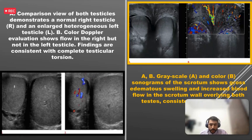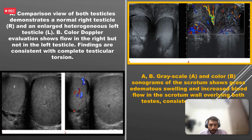In the Color Doppler and greyscale images, the right testis appears with normal vascularity while the left testis appears bulky with no vascularity on Color Doppler — this is torsion of the testis, most commonly seen in bell clapper deformity. The length and duration of torsion determines whether the testis is salvageable. With early surgical intervention, vascularity returns; bilateral orchiopexy needs to be performed since the deformity is usually present bilaterally.